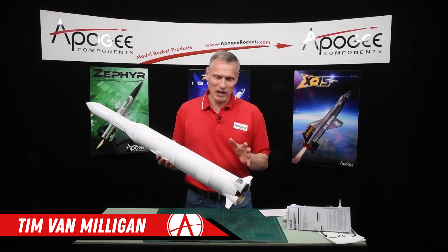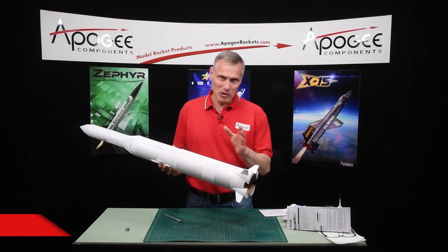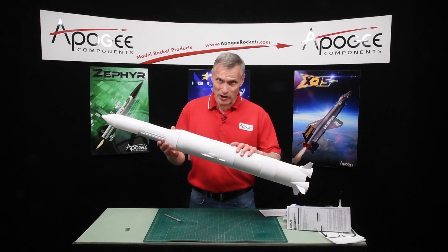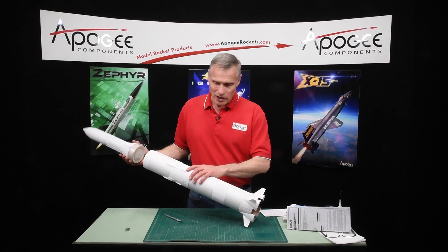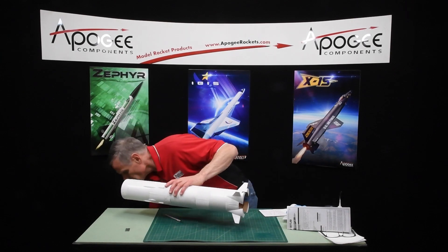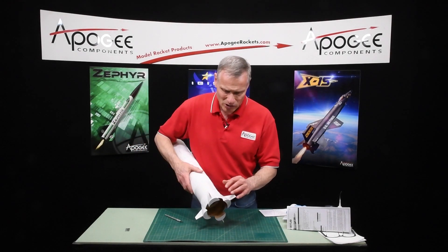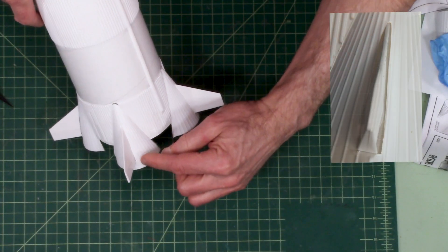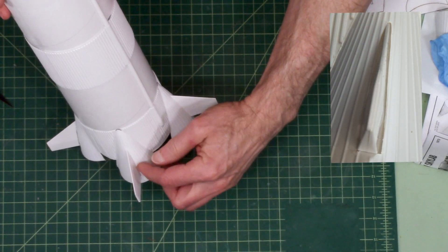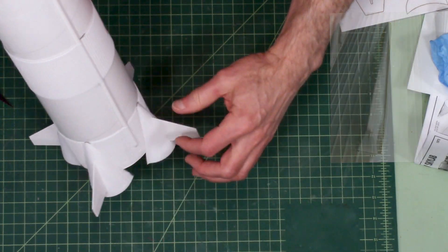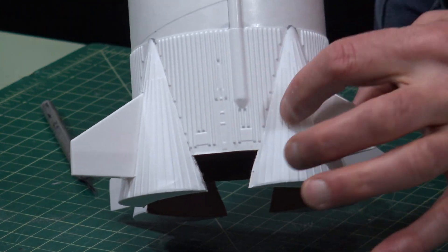Hi, I'm Tim Van Milligan from Apogee Components. I've been building the Estes Skylab rocket, which is this one right here, and I've gotten to the point where I've put everything together but I have some gaps around all the fins where they meet the fairings.